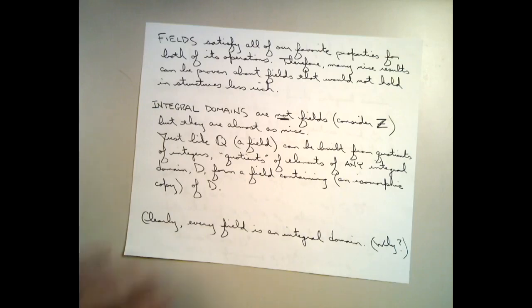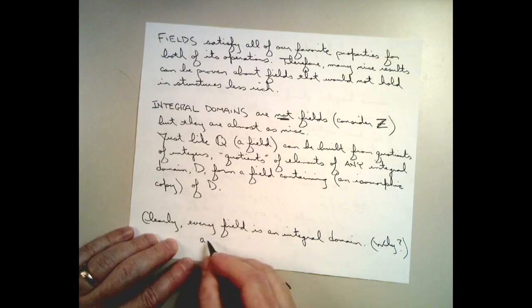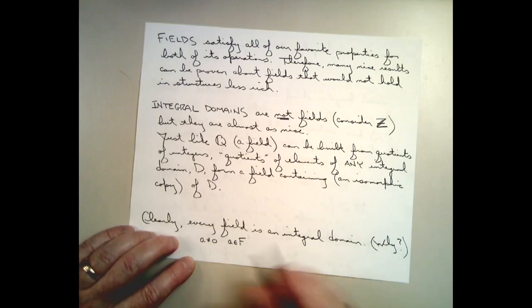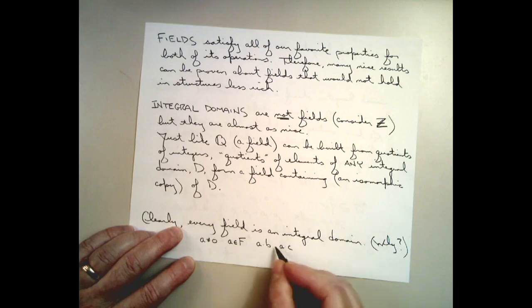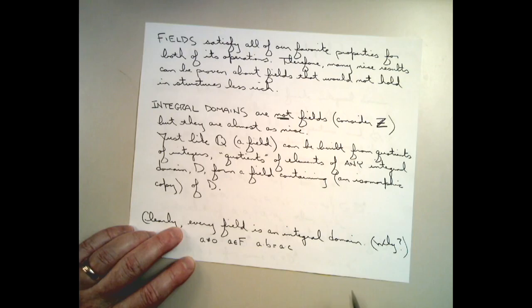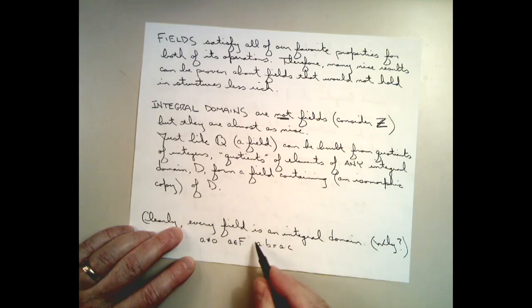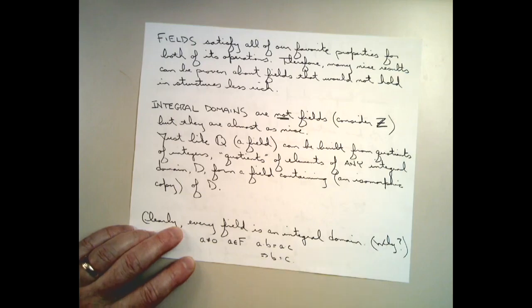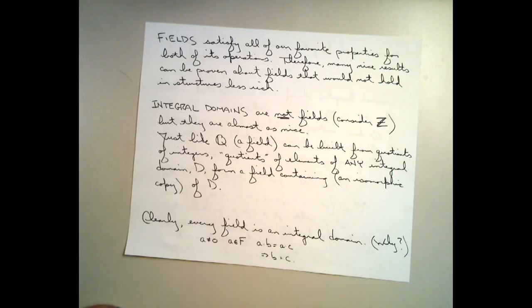Why is that? Well, if you take a non-zero element from a field and you take that non-zero element times some B, and take that non-zero element times some C, and if those two are equal, then I want to show that B is equal to C. But since I'm in a field, I can multiply both the left and the right-hand sides on the left by A inverse. I'm in a field — every non-zero element has an inverse. So A being non-zero has an inverse, and whenever I do that, what I have is that B equals C, which is exactly what I needed. So it's pretty clear that every field is an integral domain.